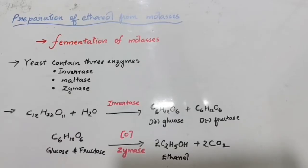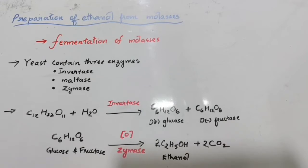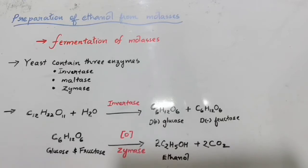Today we are going to discuss the preparation of ethanol from molasses. Molasses is a dark brown, heavy, thick syrup obtained after the crystallization of sugar. It contains some amount of sugar, so it's a very good and cheap source of ethanol, and we get this molasses from the sugar industry.